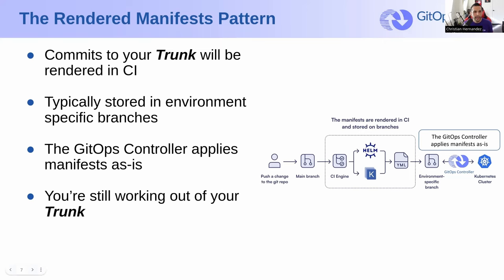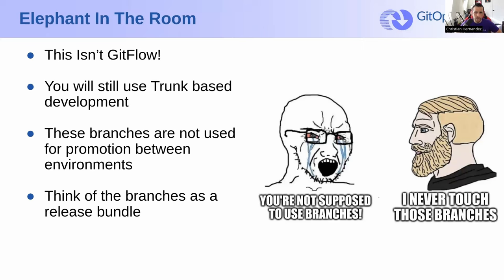I'd like to address an elephant in the room. There's a common misconception. There's this quote that we say — and a lot of GitOps practitioners say — 'don't use branches for environments.' That's actually a misconception. People take that literally, and we should probably stop saying that as GitOps practitioners, because it's not what it's meant. What we meant by 'don't use branches for environments' is: don't use Gitflow. This is not Gitflow. On the surface, the rendered manifest pattern might sound like Gitflow, but it's not. You can continue to use short-lived feature branches or trunk-based development.